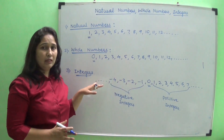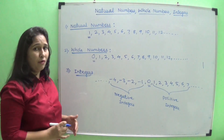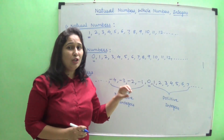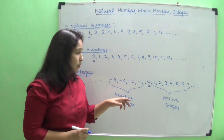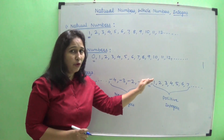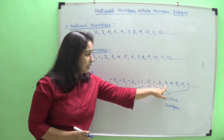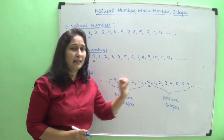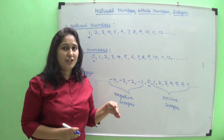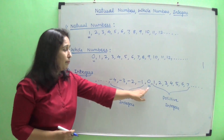Left side — all negative integers; right side — all positive integers. When you go from left to right, the value of the integers is increasing. For example, moving from 0 to 1 — of course 1 is greater than 0, then 2 is greater than 1, 3 is greater than 2, 4 is greater than 3. So when we move towards the right side, we get higher integers.